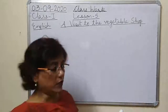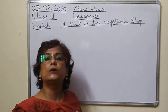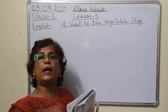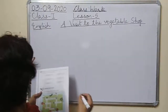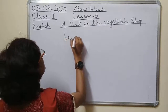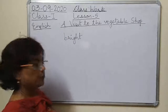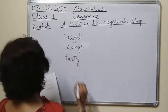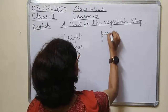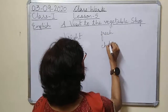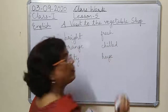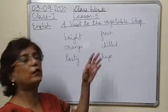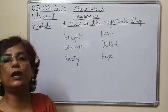Now the next exercise: there are many describing words in the lesson. Make a list of at least six of them. We have to find at least six describing words from the lesson — we can easily find them: bright morning, orange carrots, tasty green peas, fresh cauliflower, chilled lemonade, huge pumpkin, neat and clean shop.